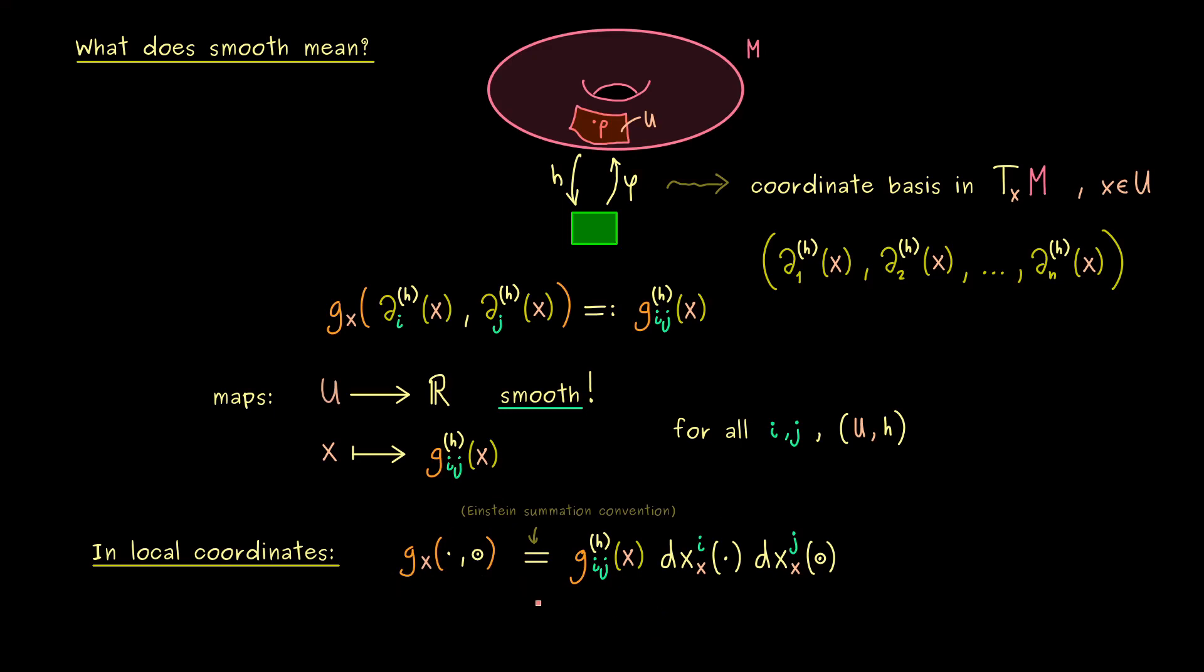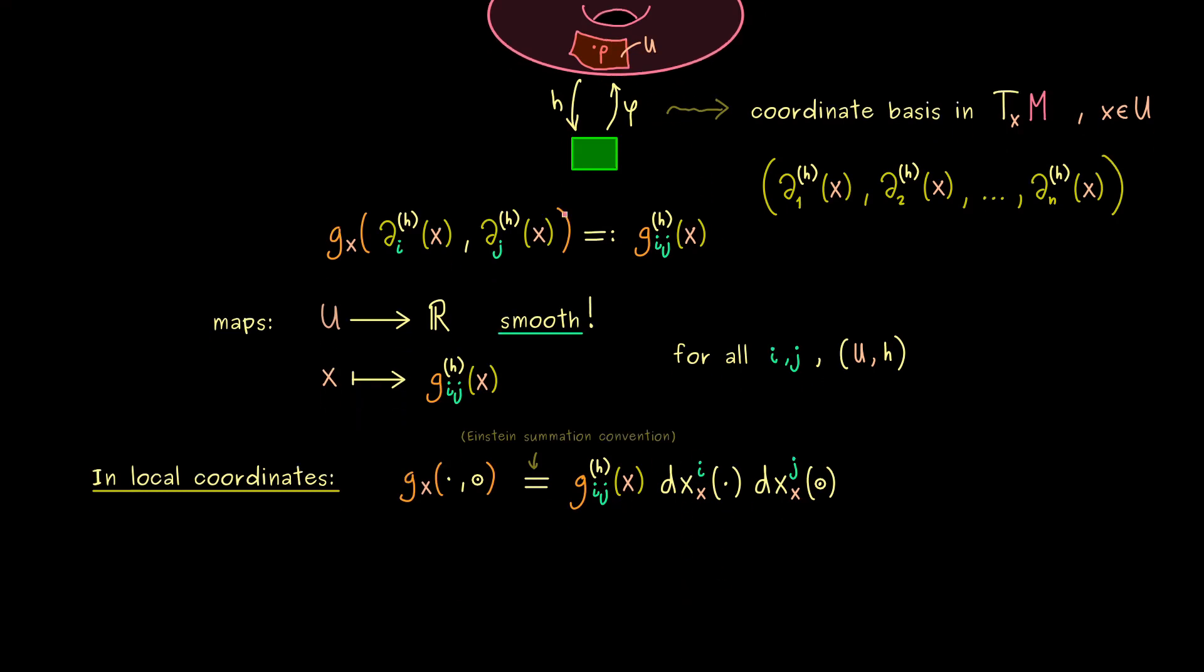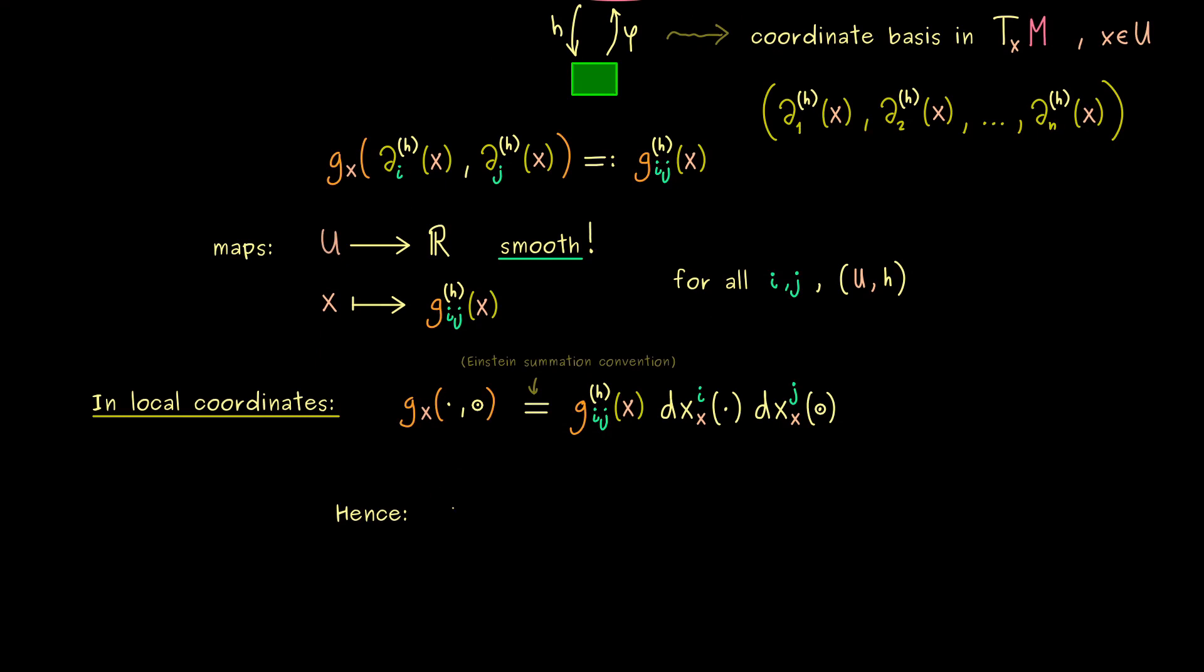Okay, and with this formula you see instead of giving an abstract Riemannian metric, you can just give these functions g_ij. But obviously you have to do it for every local chart you have. Hence our abstract g_x here can be represented by an n times n matrix.